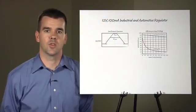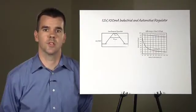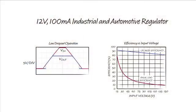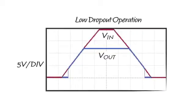In many applications, low dropout operation is necessary to maintain as high of an output voltage as possible when the input voltage falls below the regulation point. You can see in this figure that the LTC3639 has dropout performance similar to an LDO.